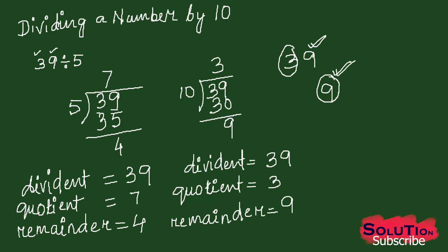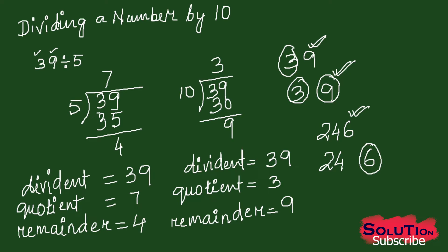The other digit will be my quotient. So if I take 246: in this number, 6 is in the ones place. If I remove or separate 6, then it will be 24 and 6. So 6 will be my remainder and 24 will be my quotient when dividing this number by 10. This is a very easy way to find the answer.